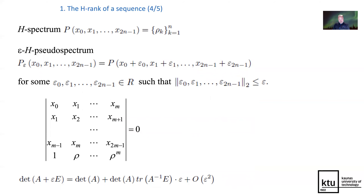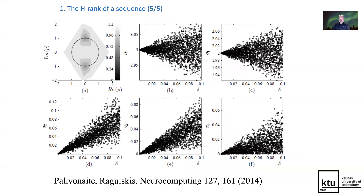It is also possible to use this concept and these techniques for approximating time series contaminated by external noise. Here are some examples showing how the H-eigenvalues approximate the exact eigenvalues when additive noise is contaminating the original sequence.